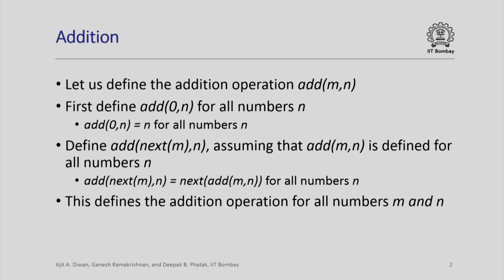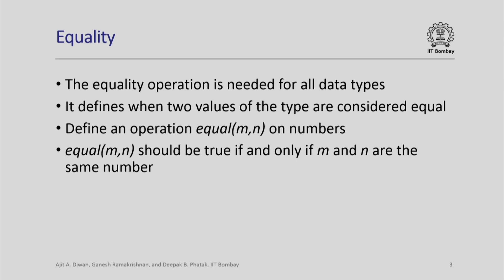This is a formal way of defining addition, which allows us to prove properties of addition. It is a clear, unambiguous way of defining the meaning of the addition operation. Let us look at another such operation. This is typically required whenever you define any data type — you have ways of constructing its values, but you need to specify when two values are considered to be equal. Typically there is a double-equal-to operator for any type in C++, which you need to define whenever you define your own type.